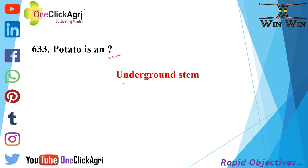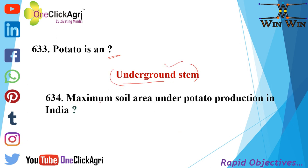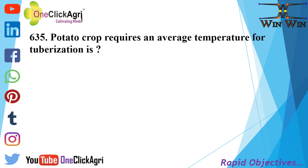Potato is an underground stem — please remember this. The maximum soil area under potato production in India is alluvial soil. Potato crop requires an average temperature for tuberization of 17 to 20 degree Celsius.